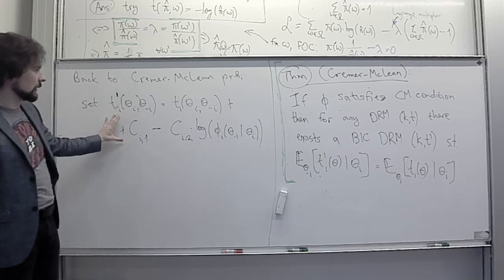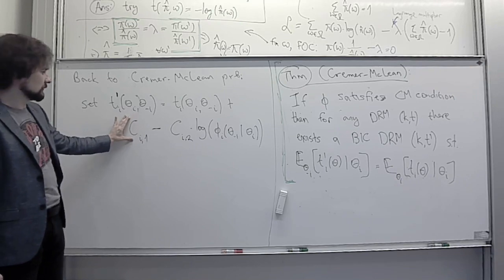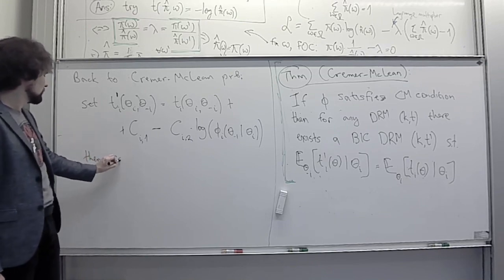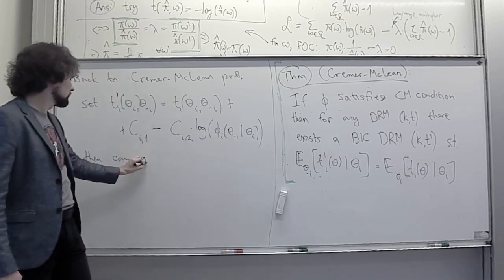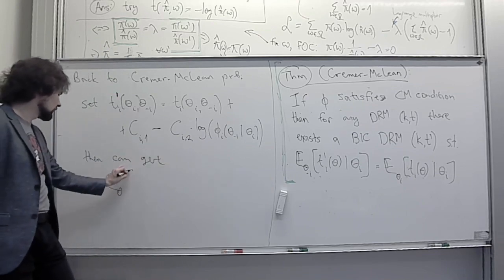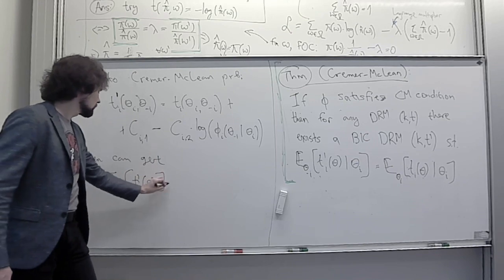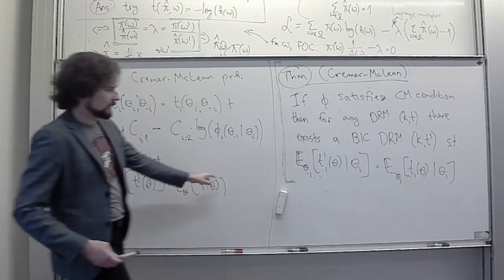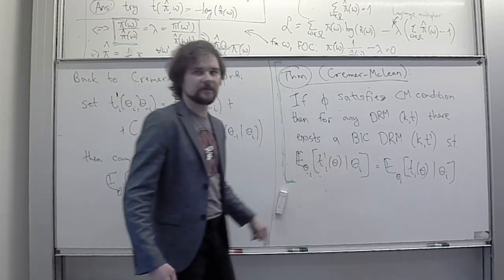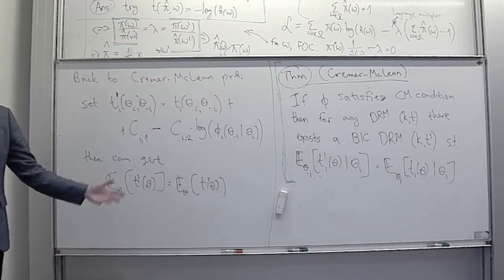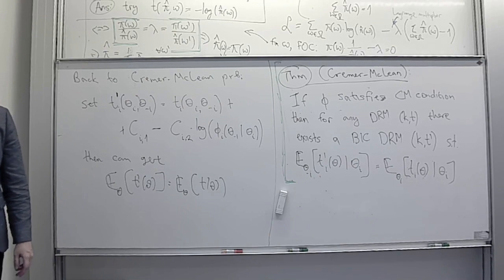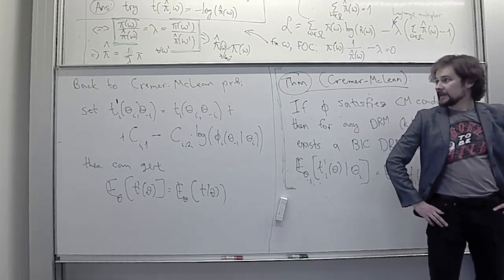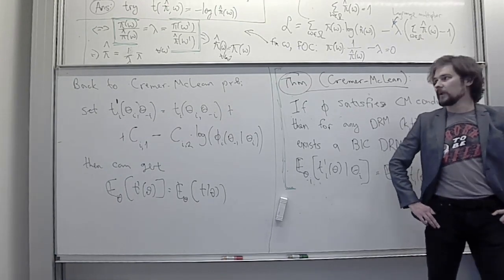Then we use the constant C_{i1} to adjust the expected profits. This gives us equality of ex-ante expected transfers. To get the equality of interim expected transfers you need slightly heavier machinery — the proof uses Farkas' lemma, which you can find in the textbook.